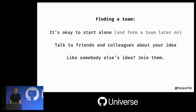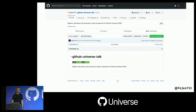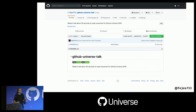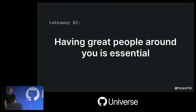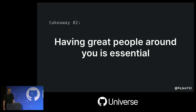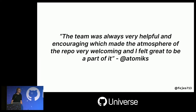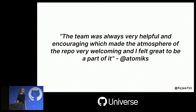I created a repository called GitHub Universe Talk and invited all my friends who joined the organization early on to hear their opinions. Through open source we developed a lot of friendships. Once we reached 50,000 stars, I told myself I would get airplane tickets and meet all the contributors who were active in the early days. One team member named Atomics said: 'The team was very helpful and encouraging, which made the atmosphere of the repository very welcoming. I felt great to be part of it.'